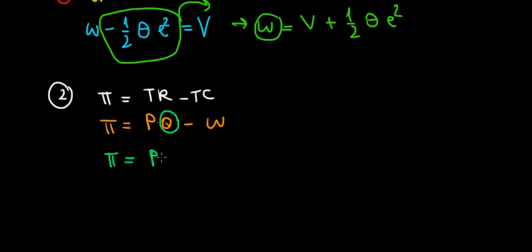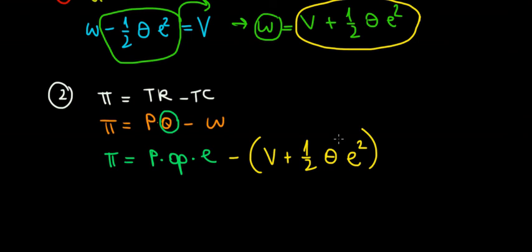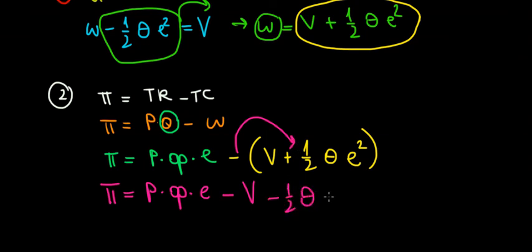The profit function becomes: price times theta times E, minus the wage, where the wage is V plus one-half theta e squared. We want to find the effort level optimal for the company, since effort determines production and production determines revenue. Opening the brackets gives us: P times theta times E, minus V, minus one-half theta e squared.